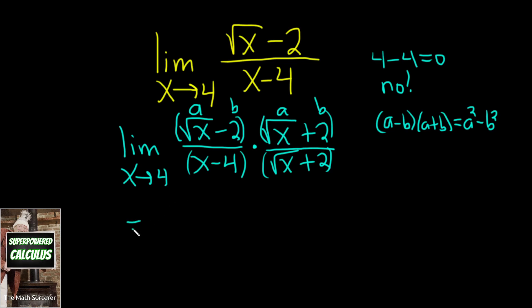So this is equal to the limit as x approaches 4. So it'll be the square root of x squared, which is just x, but I'll show the work, minus 2 squared, which is just 4. Normally nobody shows this step, but I will show it to you in this video.